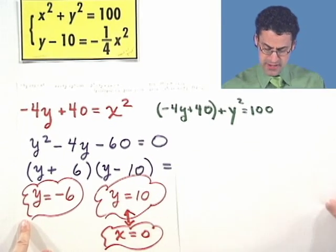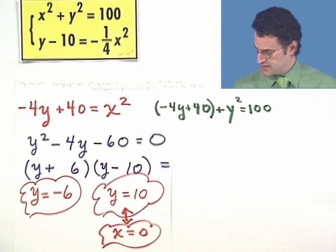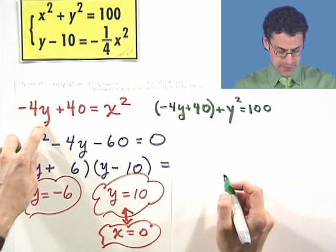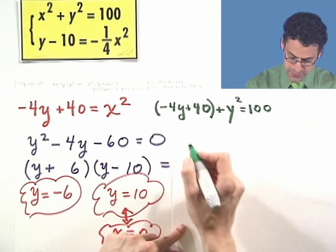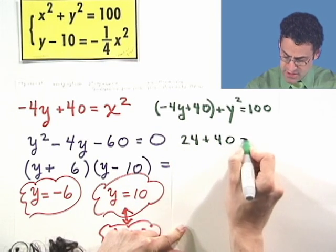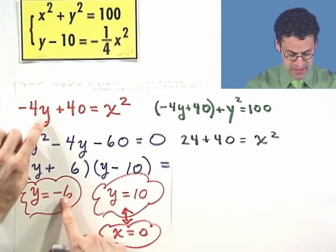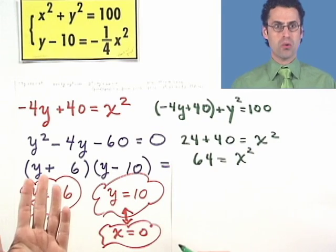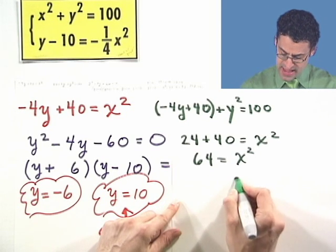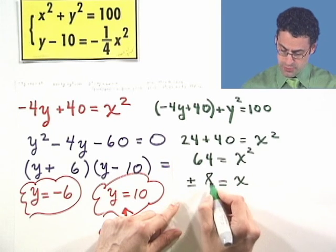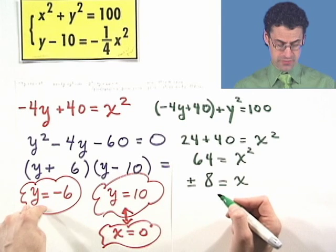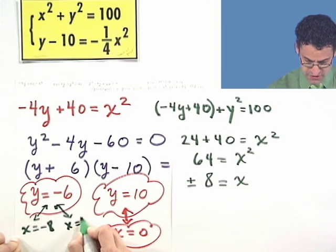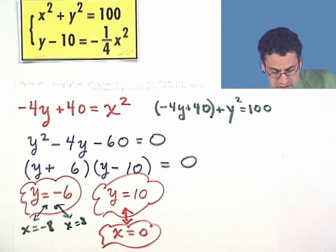Now what about y equals negative 6? Plugging negative 6 into x squared equals negative 4y plus 40: negative 6 times negative 4 gives positive 24, so 24 plus 40 equals x squared, giving 64 equals x squared. This is a quadratic, so there are two answers: x equals plus or minus the square root of 64, which is plus or minus 8. So y equals negative 6 gives us two x values: x equals negative 8 and x equals 8.